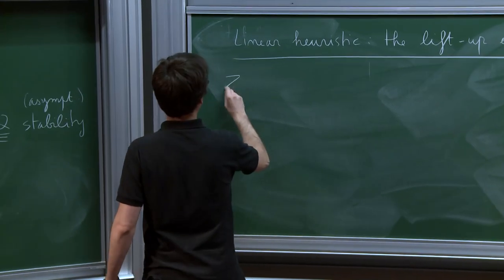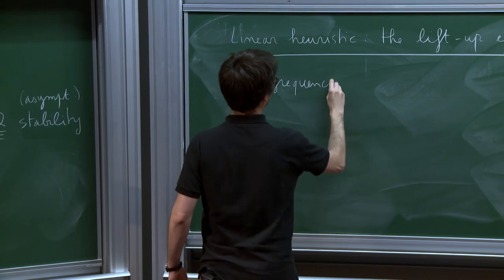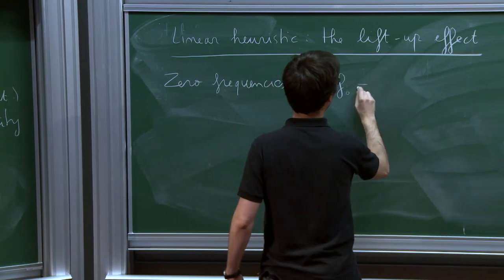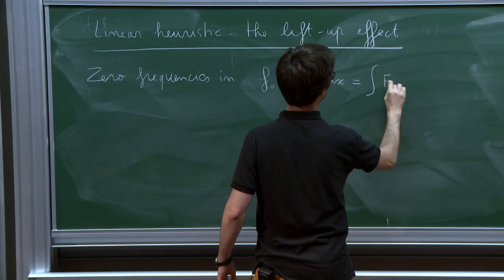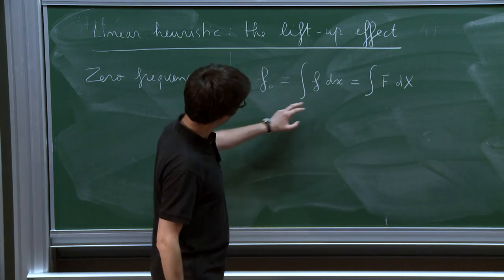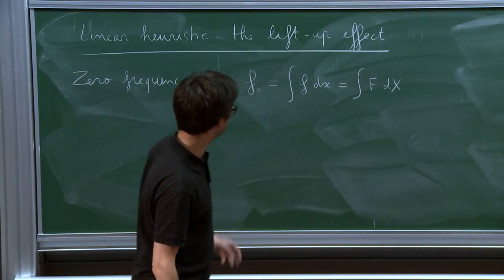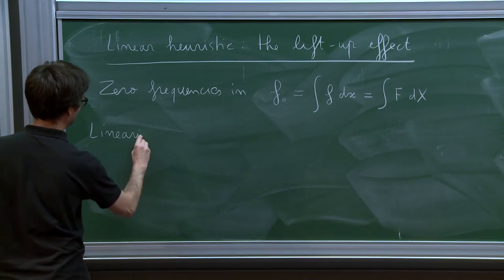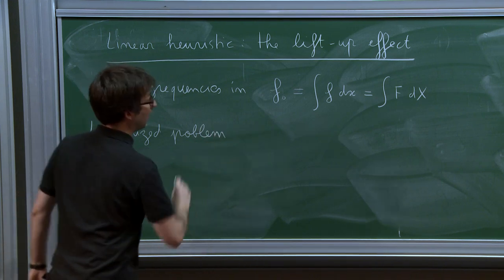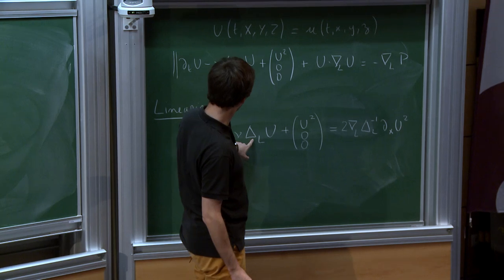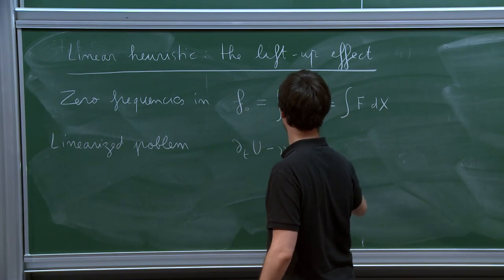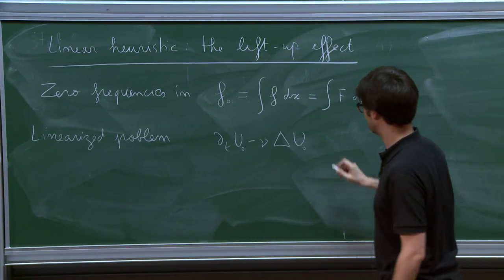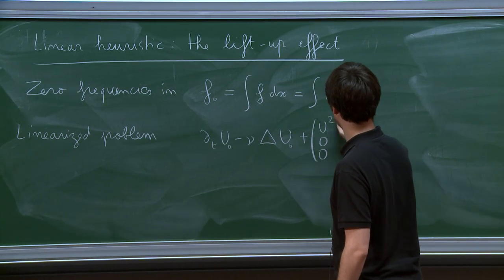So if you look at the linearized problem, the shear will only affect the nonzero frequencies in x. So the picture is very different depending on whether you look at zero frequencies or nonzero frequencies in x. So here, we look at zero frequencies in x, and we call f sub 0 the integral of f dx, which is the same as the integral of f dX, but it doesn't matter. It's just zero frequencies in the x variable. So it turns out the linearized problem is extremely simple for zero frequencies. Because then the dx u2 cancels, so the right-hand side cancels, and the delta L becomes a regular delta.